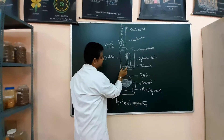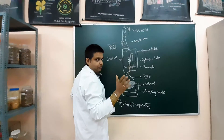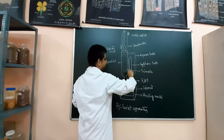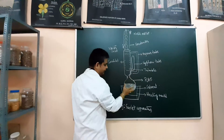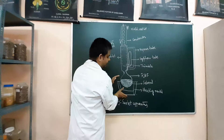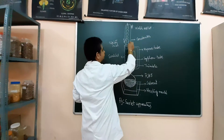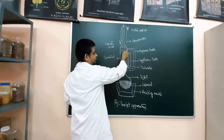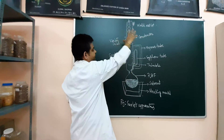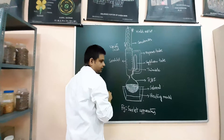The drug is packed into a thimble and placed inside the Soxhlet chamber. Sufficient solvent is added, which runs through a cycle tube and deposits into the round bottom flask placed on a heating mantle. Heat causes the solvent to evaporate; the vapor travels up through the vapor tube, contacts the condenser, condenses back to liquid, and drips onto the top of the drug. This cycle repeats continuously.